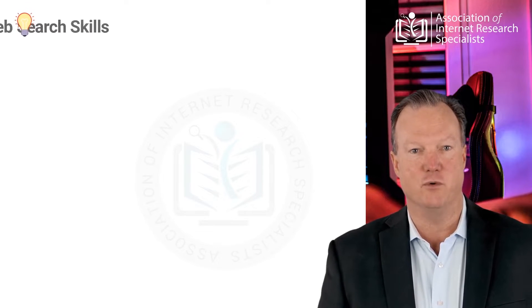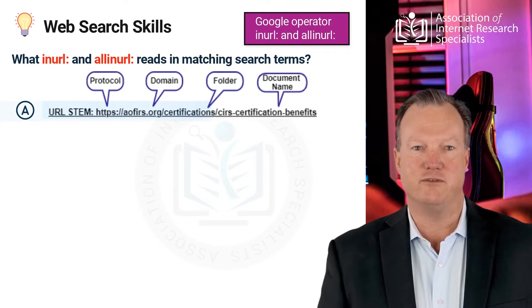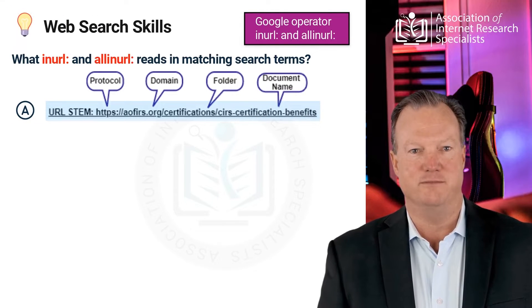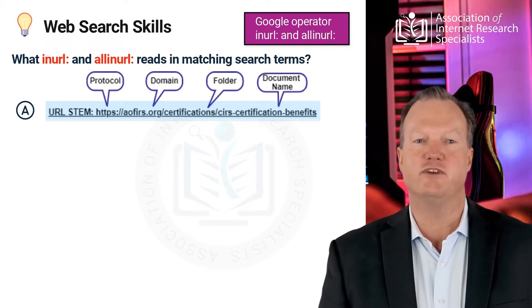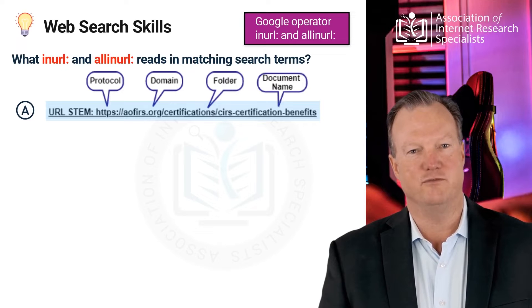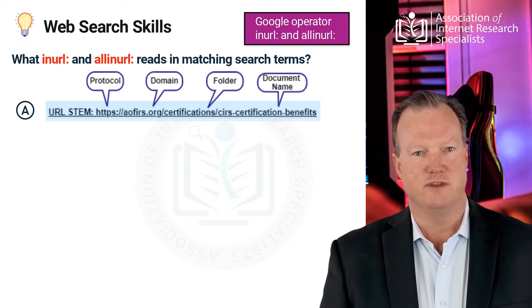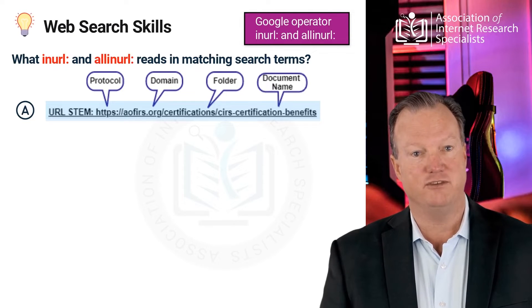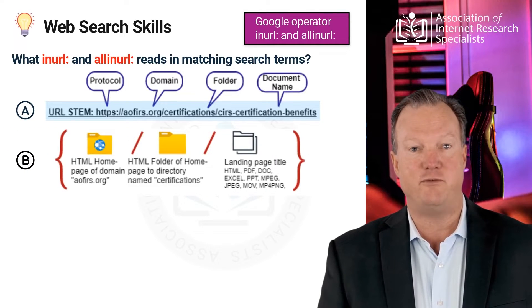In order to understand the function of inURL and allinURL, we need to explain the link structure. The stem or path of the URL is shown in A. It starts with the Hypertext Transfer Protocol Secure, or HTTPS. This protocol secures communication and data transfer between a user's web browser and a website. A colon sign followed by two backslashes separates the protocol from the host domain name. What comes after the domain afears.org are the hierarchical arrangements of named folders and subfolders separated by a backslash that lead the user to reach the landing page. As indicated in B, the folder named Certifications is followed by a backslash and landing page titled CERS Certification Benefits.